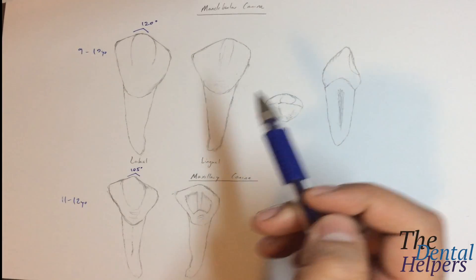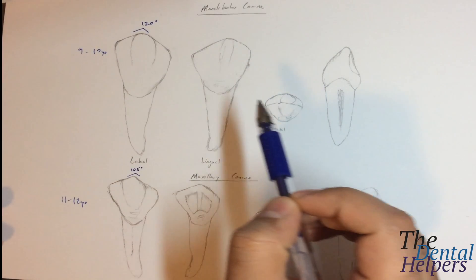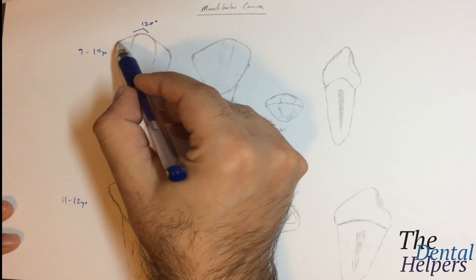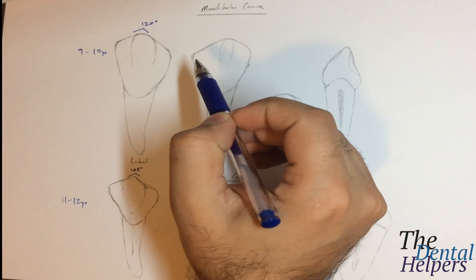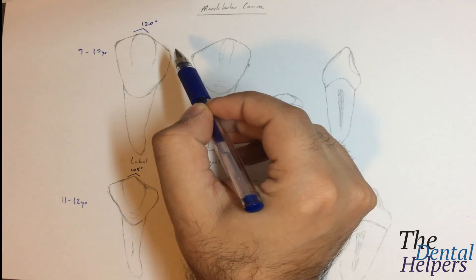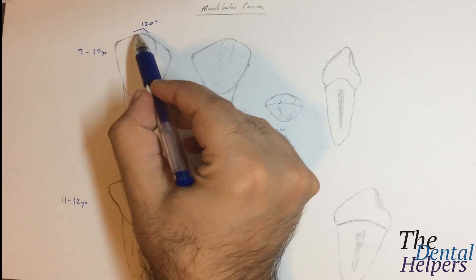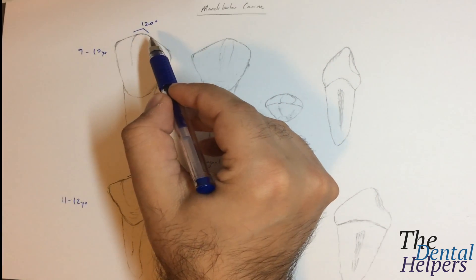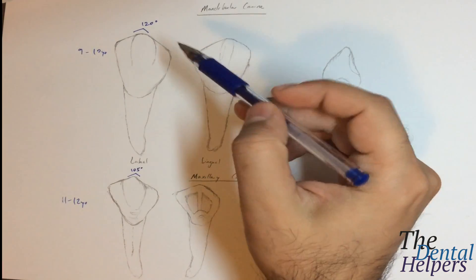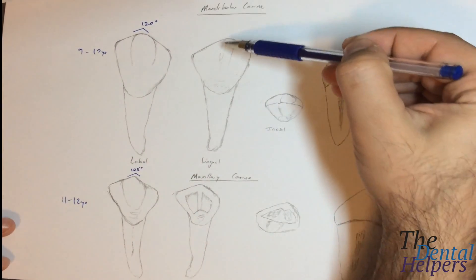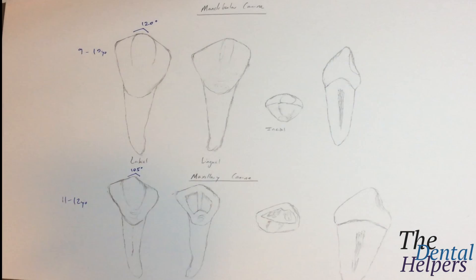If we look at the incisal ridge, as well as the cusp tip on the mandibular canine, we're going to see that it's located slightly lingual to the root axis. So there's going to be a slight lingual tilt. A commonality that you're going to see in the mandibular is this lingual tilt, so just keep that in mind.